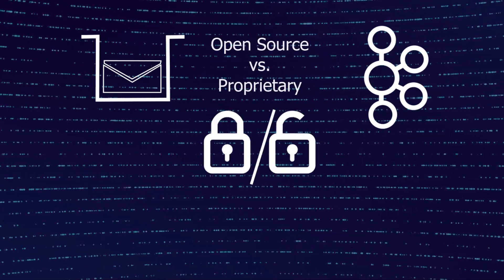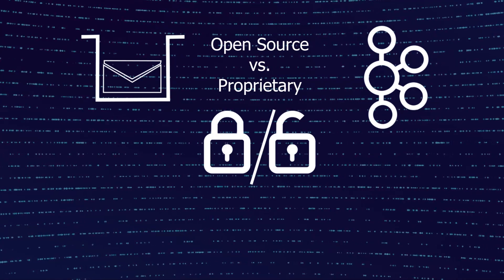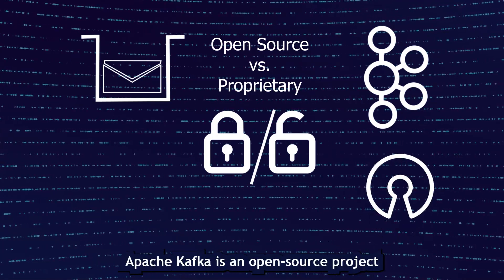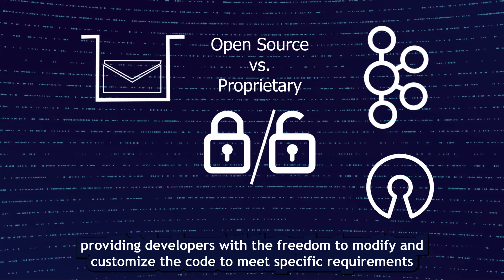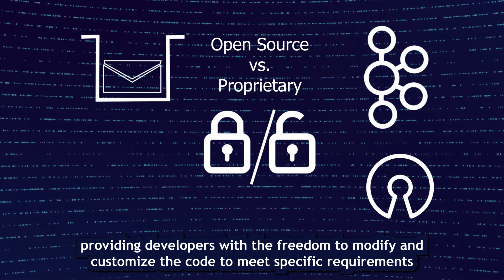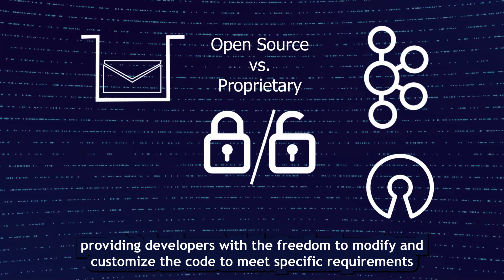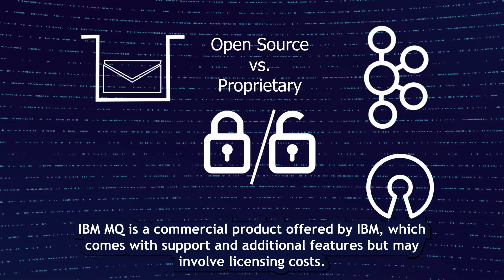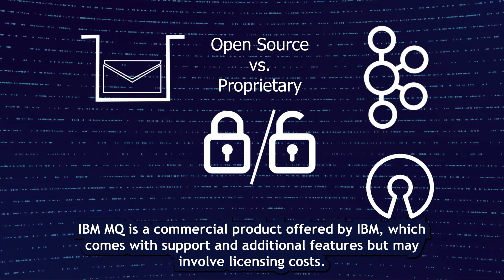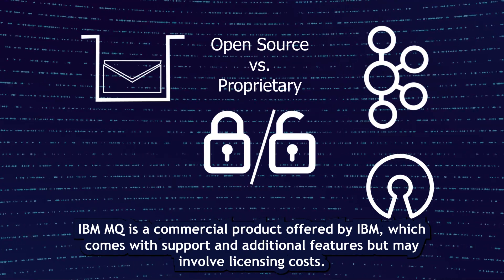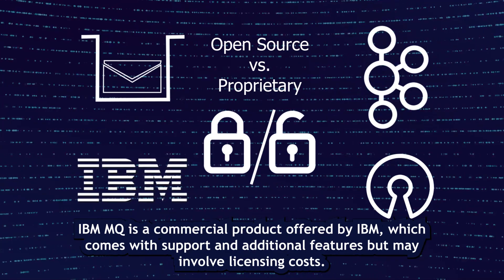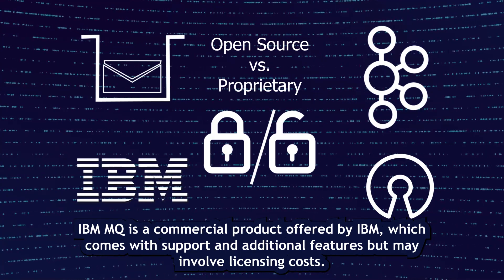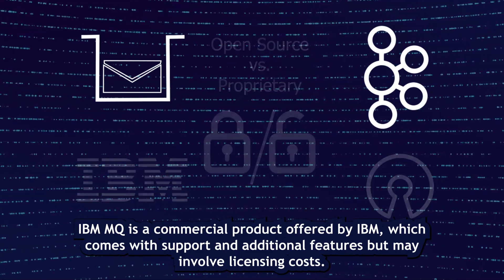Open source versus proprietary: Apache Kafka is an open-source project, providing developers with the freedom to modify and customize the code to meet specific requirements. IBM MQ is a commercial product offered by IBM, which comes with support and additional features, but may involve licensing costs.